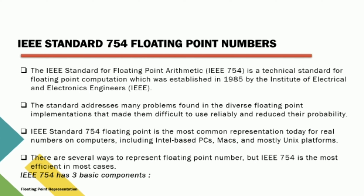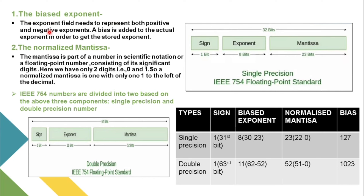IEEE 754 has three basic components: the sign, the biased exponent, and the normalized mantissa. The exponent field needs to represent both positive and negative exponents; a bias is added to the actual exponent to get the stored exponent. The mantissa is the part of a number in scientific notation consisting of its significant digits — here only two digits, zero and one. A normalized mantissa has only one digit to the left of the decimal point. Numbers are divided into single precision and double precision based on these three components.